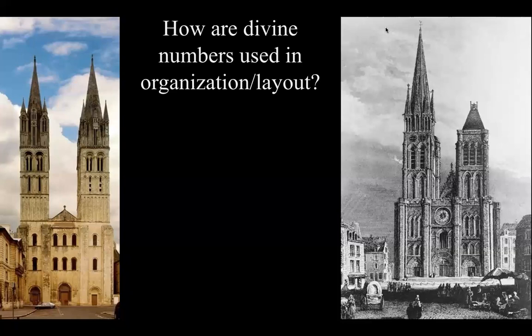Lots of threes are popping up. Notice how the facade is vertically divided into threes. Those vertical posts we see are called buttresses — not flying buttresses, but added supports. The facade has four of those divided into three, and if you look at those spaces, each is divided into horizontal threes as well, in portals, arches, and rose windows. The towers themselves are mostly divided into threes.